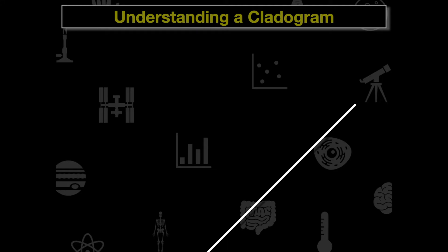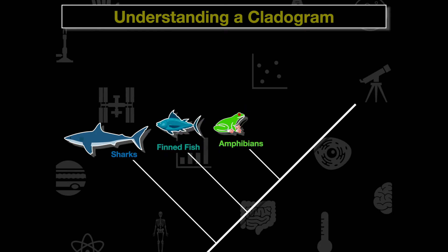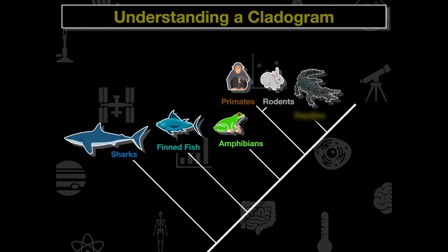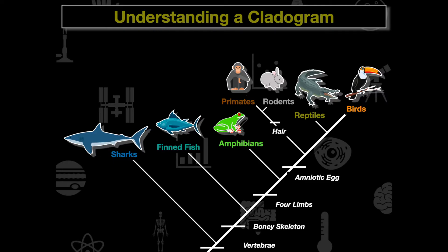We're going to make a cladogram here as our example. We'll start with sharks, then finned fishes, then amphibians, primates, rodents, reptiles, and finally birds. Looking at the differences between these organisms, first we have vertebrae, then a bony skeleton, then four limbs, then amniotic eggs, then hair, and then eggs with hard shells.